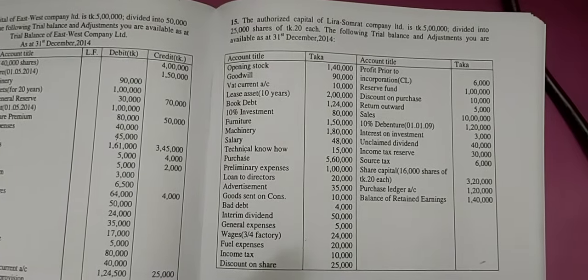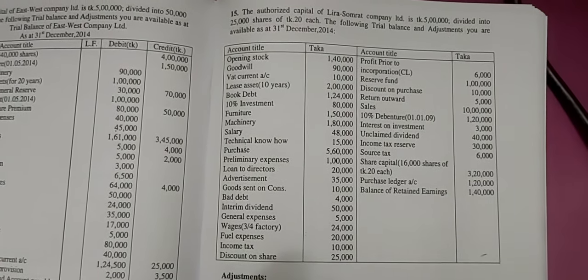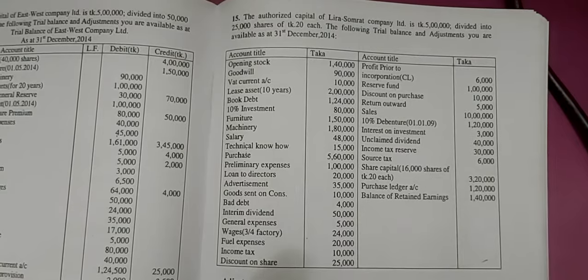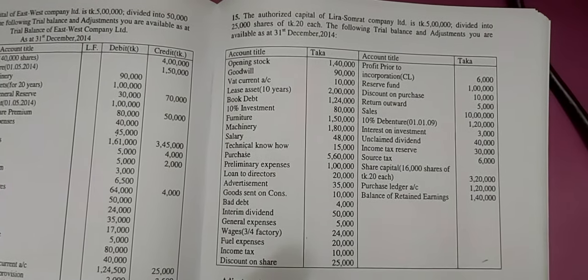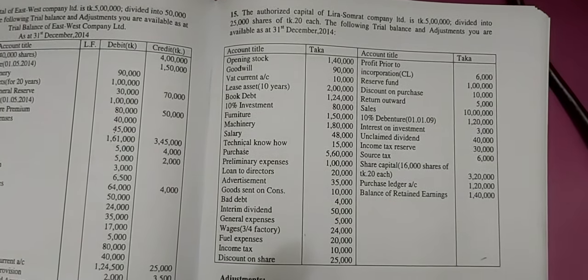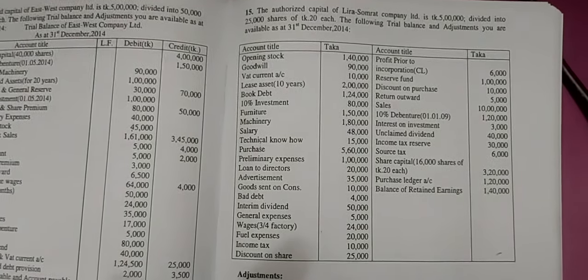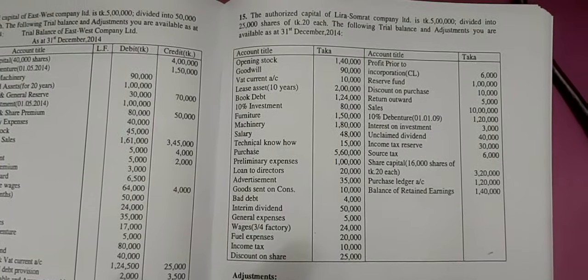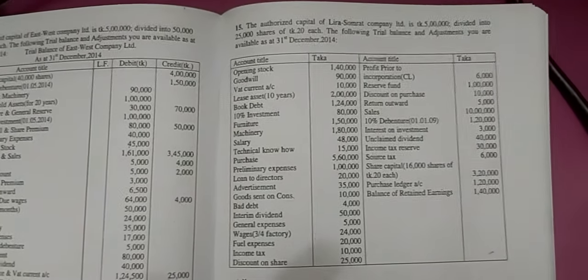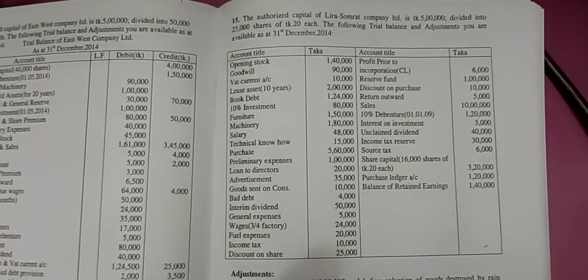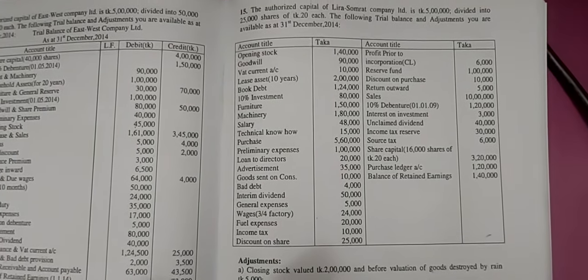The authorized capital of Lira Samrat Company Ltd is Taka 5 lakh, divided into 25,000 shares of Taka 20 each. The following trial balance and adjustments are available as at 31 December 2014. The trial balance has two sides — the left debit side and the right credit side.